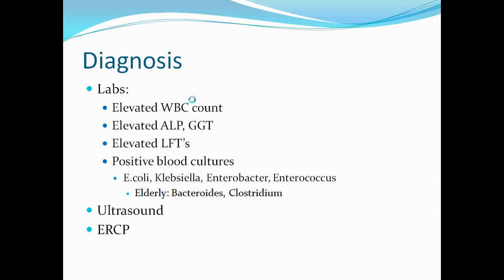To diagnose cholangitis on lab tests, you will often see an elevated white blood cell count, elevated alkaline phosphatase, GGT (gamma glutamyl transferase), and elevated LFTs. You will often have positive blood cultures, and the culprit organisms are generally E. coli, Klebsiella, Enterobacter, and Enterococcus. In the elderly, you can often have anaerobes such as Bacteroides and Clostridium.